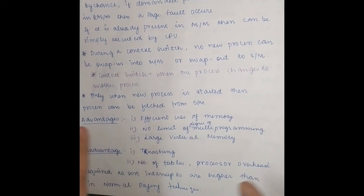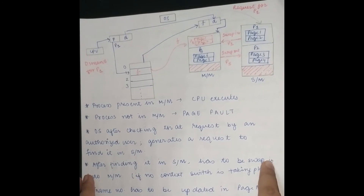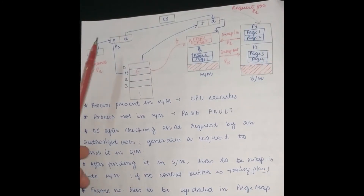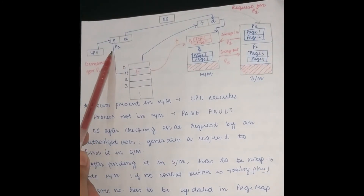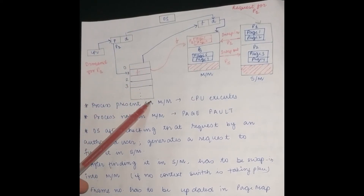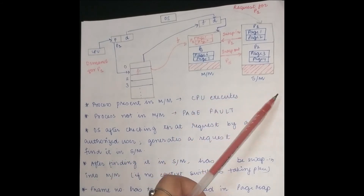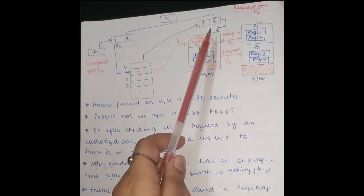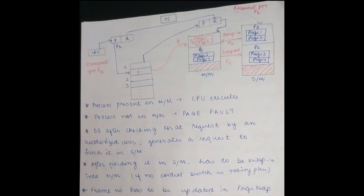There are some methods to execute Demand Paging. First, the CPU is given P and D, where P is the page number and D is the instruction offset. We have a page map table, main memory, secondary memory, and a frame number along with the instruction offset.